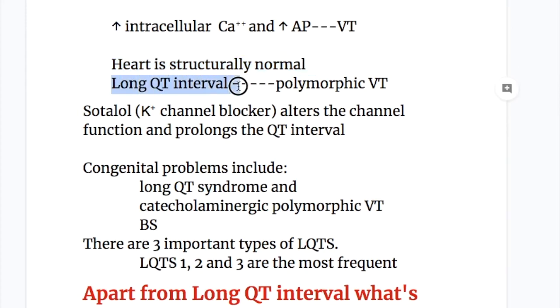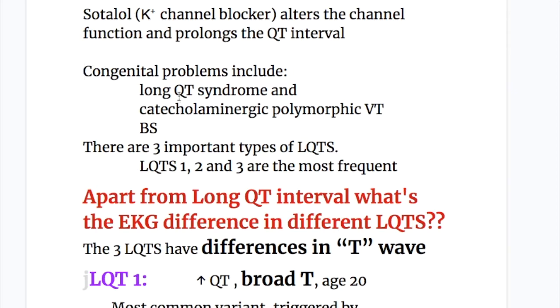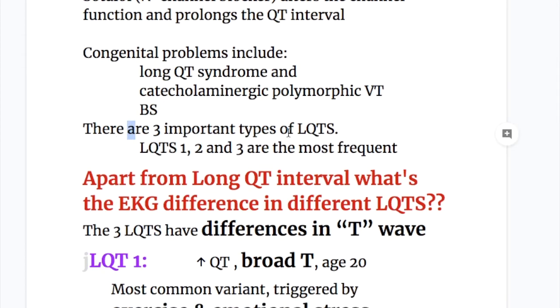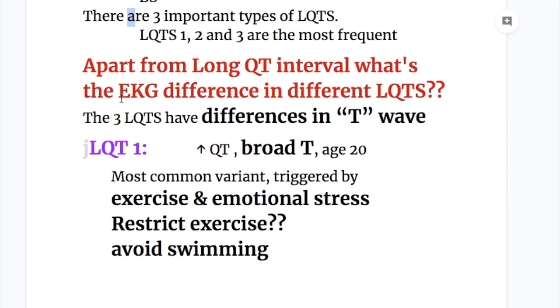The long QT interval causes polymorphic ventricular tachycardia. The drug sotalol, which is a potassium channel blocker, alters the channel function and prolongs the QT interval. Congenital problems include Long QT syndrome, catecholaminergic polymorphic ventricular tachycardia and Brugada syndrome. There are three important types of LQTS: LQTS 1, 2 and 3 are the most frequent. Apart from the long QT interval, what's the EKG difference in different LQTS? The three LQTS areas have differences in T waves.